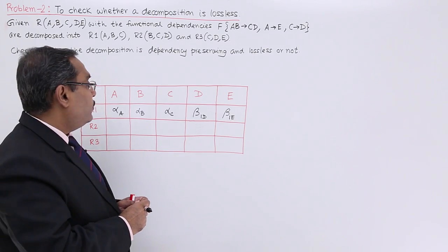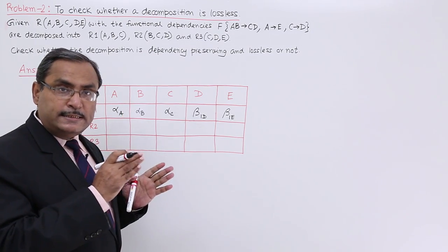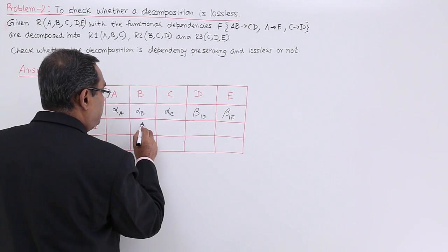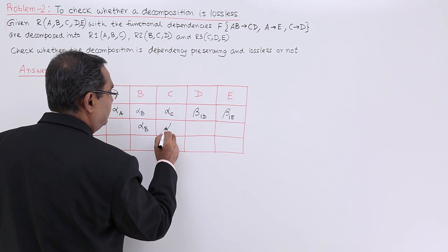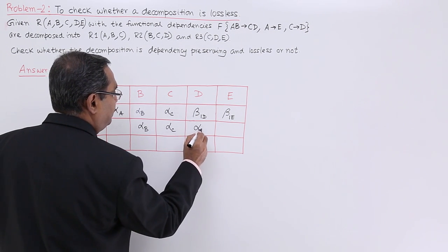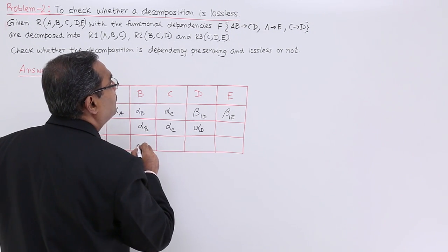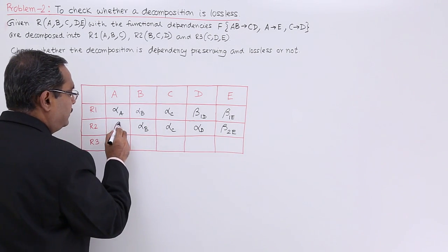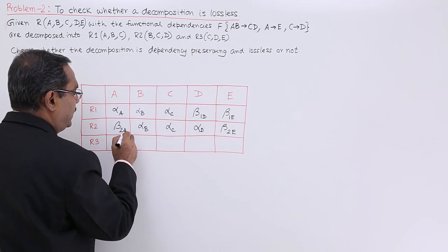Next we are going for R2. R2 is having B, C and D. For B, C and D, and the rest will be filled up with beta. It will be beta 2E and it will be beta 2A.